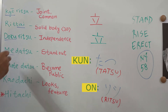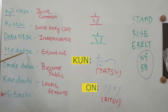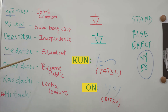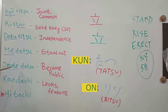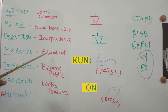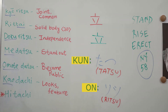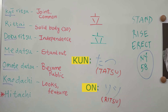Medatsu — me means eye, so something that is easily visible to the eye is something that stands out or is easily noticeable. Omotedatsu — omote means surface, so something that comes to the surface or stands out at the surface; it gives the meaning of becoming public. Kaodachi — kao means face, so something standing out with your face refers to the features or the looks of a person.